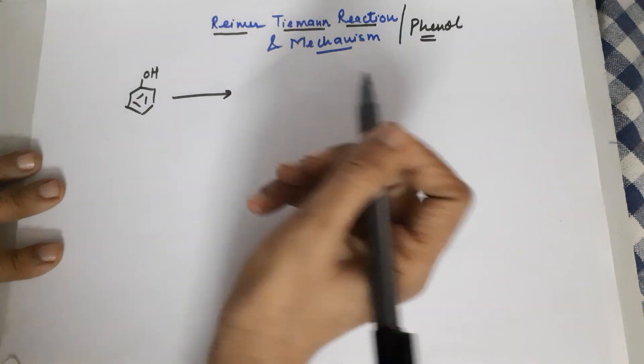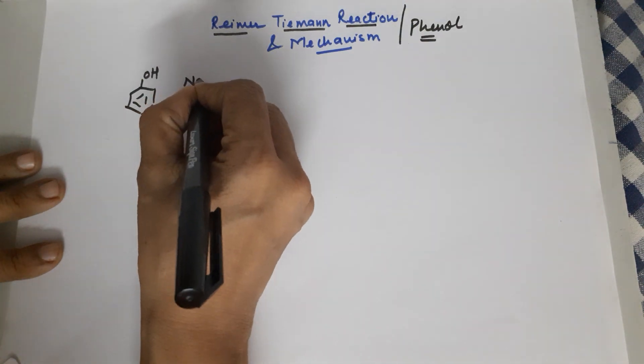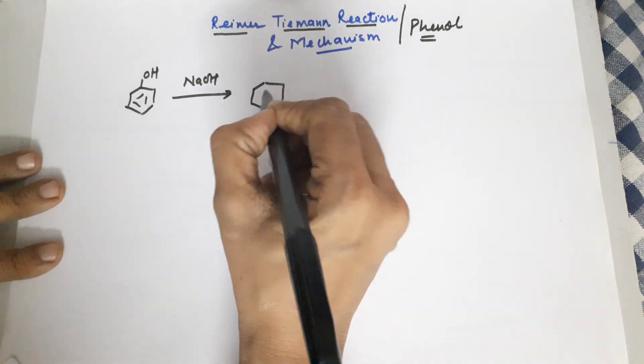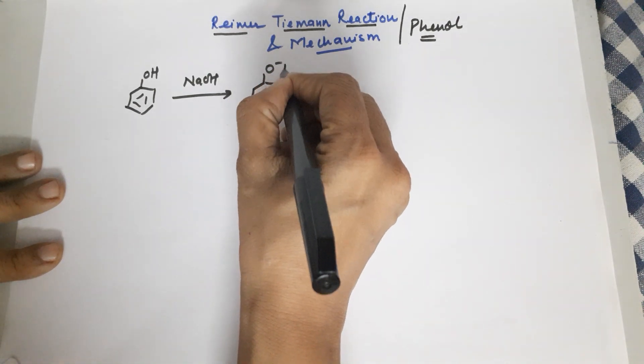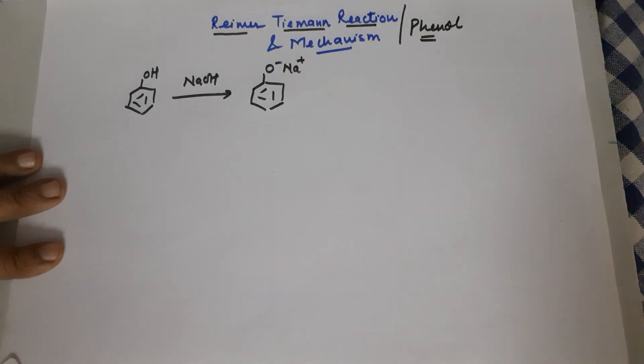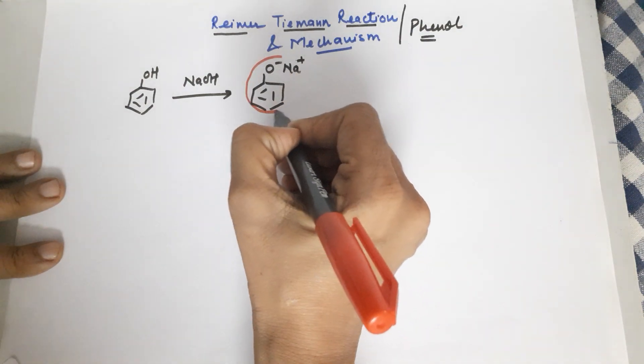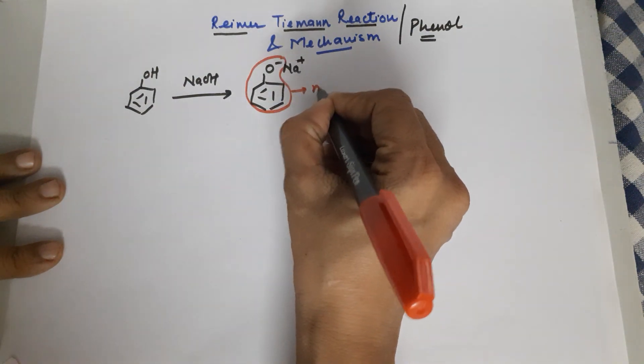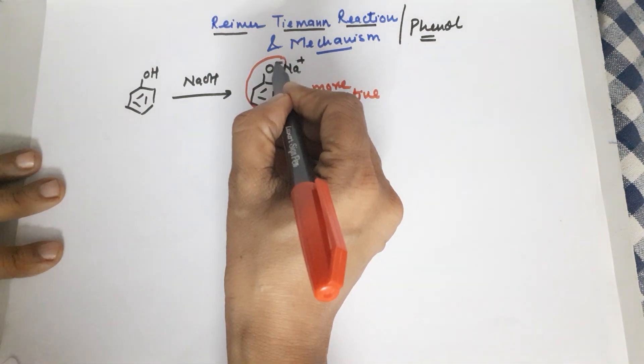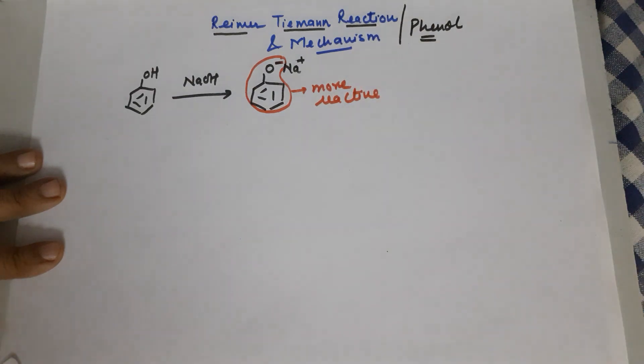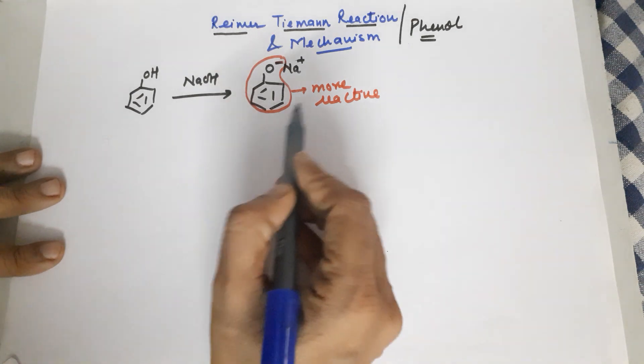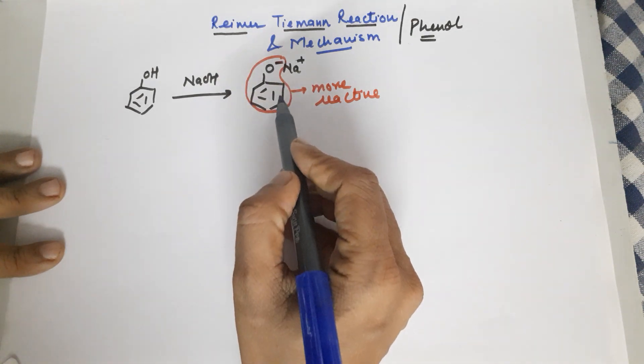is first treated with a strong base. This strong base could be NaOH, could also be KOH. The purpose of reacting it with a strong base is to form sodium phenoxide or potassium phenoxide. As you very well know, the phenoxide ion due to the negative charge on oxygen is more reactive. It is more activating due to this negative charge on oxygen. Hence the reaction moves faster. That is why the first step is to treat with NaOH to lead to the formation of a phenoxide ion.